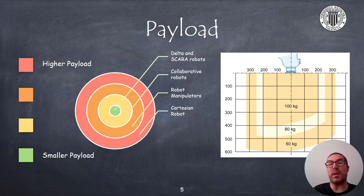Robots with the highest payload capacity are Cartesian robots. Then we have manipulator and collaborative robots. And finally, with significantly lower payload, we can find SCARA and Delta robots.